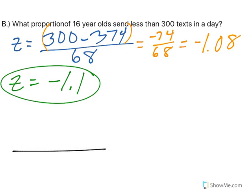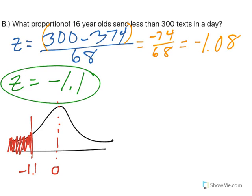So when I'm looking at my normal distribution, I'm big on drawing pictures. Your z-score at the mean is 0. So a z-score of negative 1.1 is going to fall to the left of 0. Think about a number line. And we are looking for less. Less means to the left. So we're looking over here.